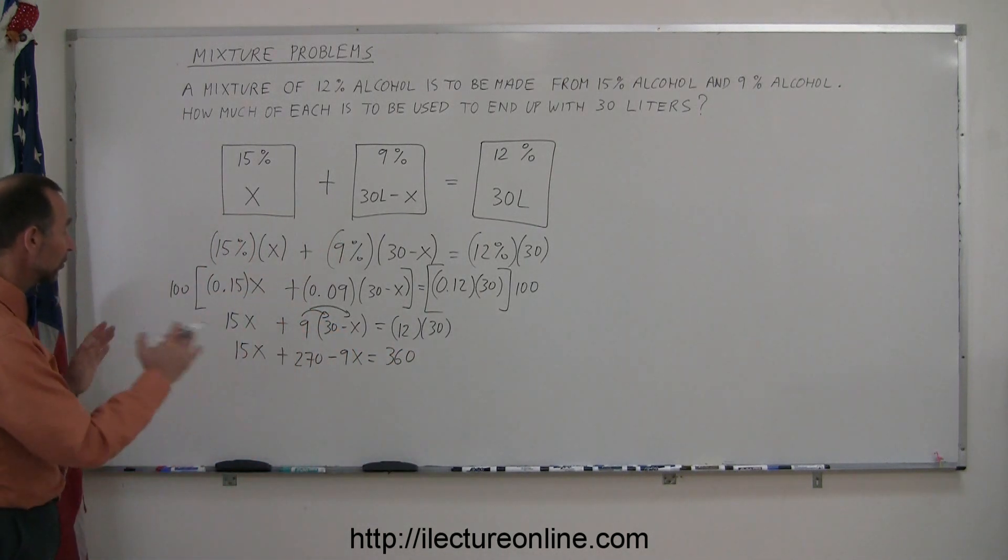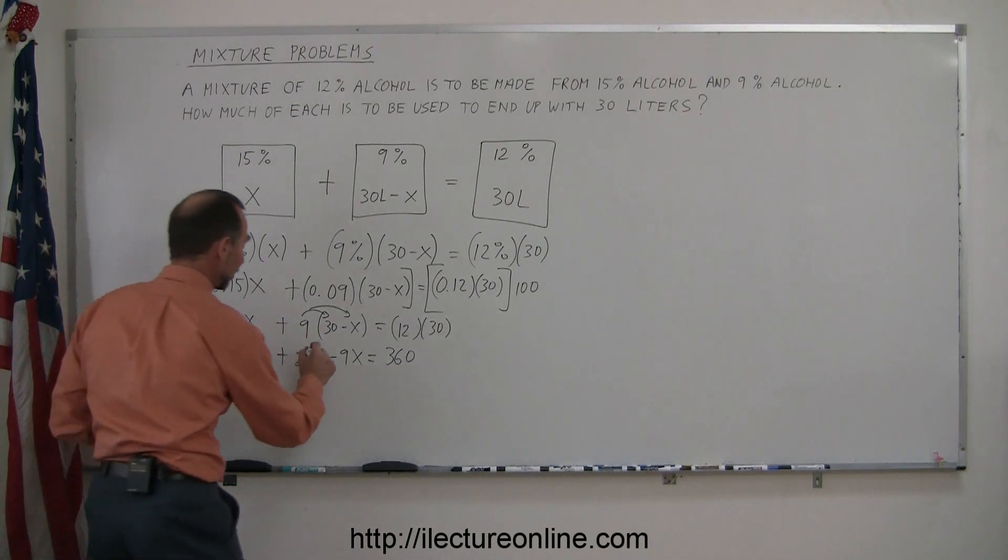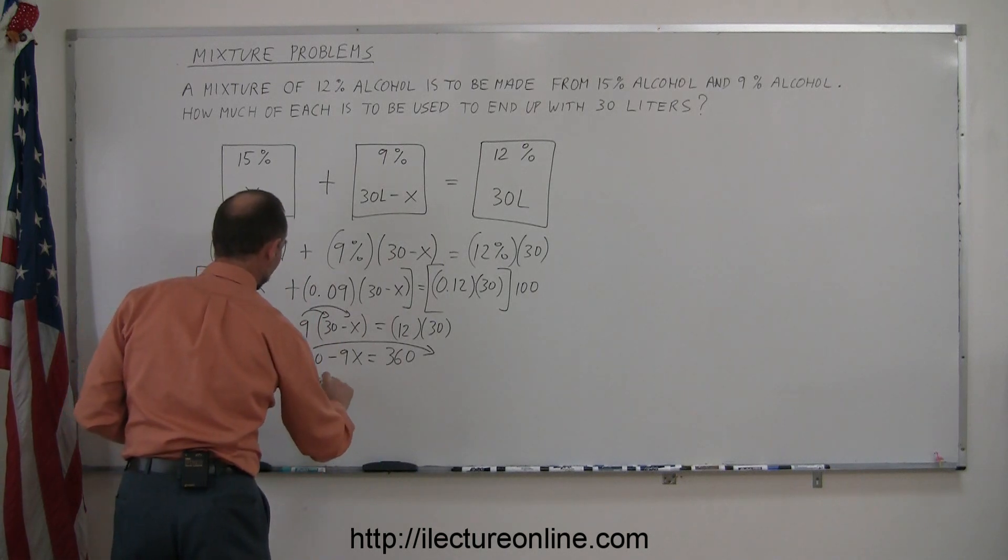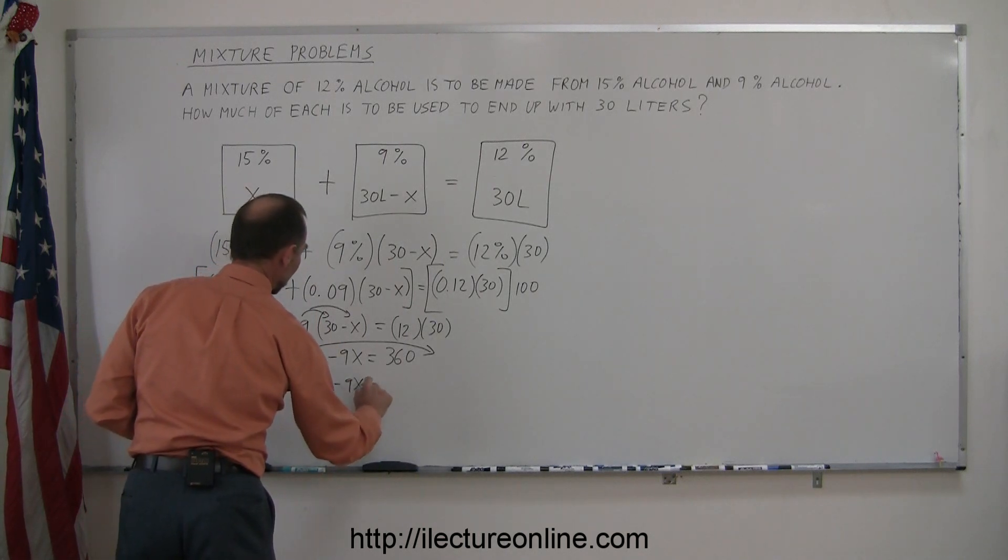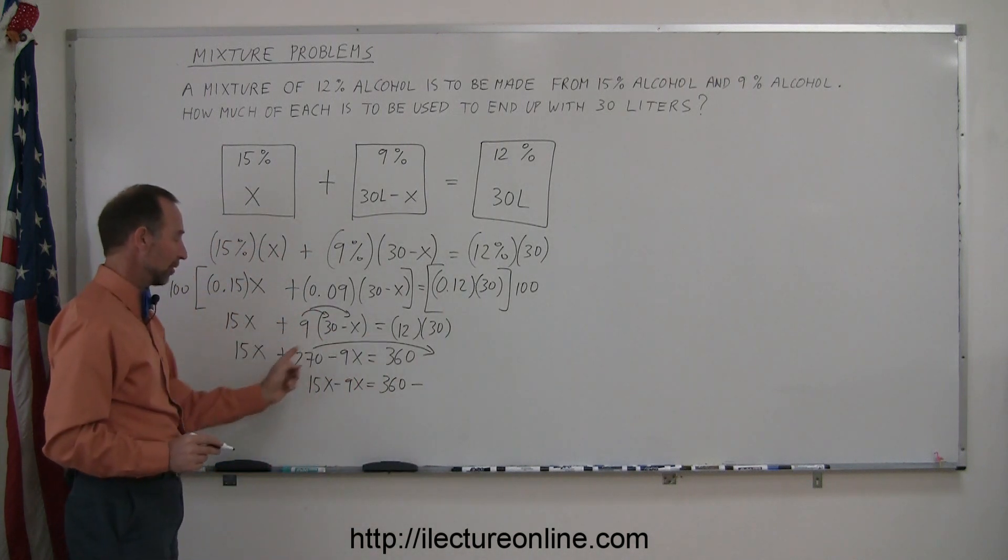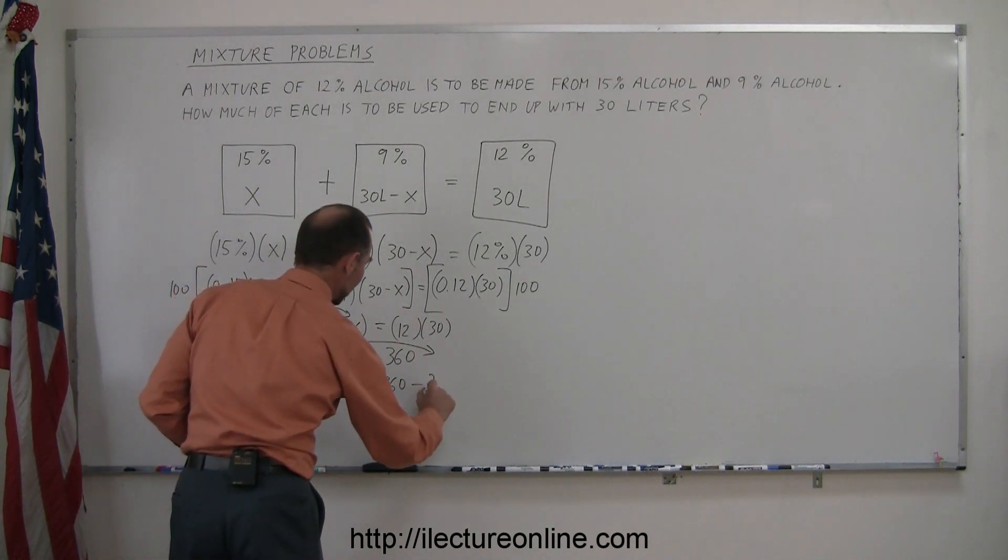Now we go ahead and move all the X's to one side. They're already on the left side, and move all the numbers to the other side. So let's take the 270 and move it over here. So we have 15X minus 9X equals 360 minus, remember when you cross the equal sign the sign changes, this is minus 270.